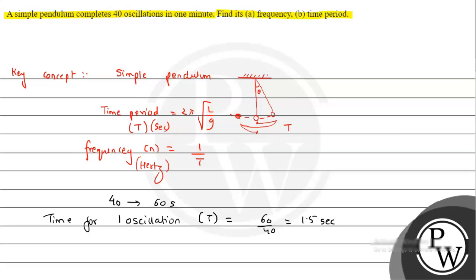Now we can calculate frequency. n = 1/T = 1/1.5 = 2/3, which is approximately 0.67 hertz. So the frequency is 0.67 Hz and the time period is 1.5 seconds. This was part (b) and part (a) respectively. I hope you understood the solution — all the best!